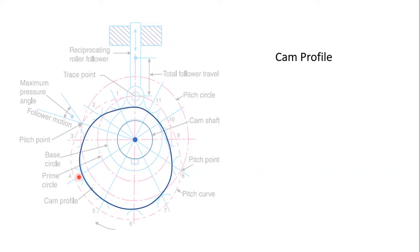This is a typical cam profile — for example, I have taken this shape, though there can be different shapes also. This blue line is the cam profile. This dot over here is the center of rotation of the cam, and this whole profile is revolving or rotating around this center point. This circle over here is the camshaft. The cam is mounted on this camshaft and it is revolving around this center.